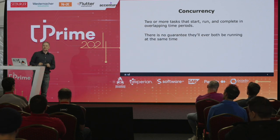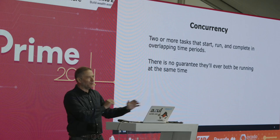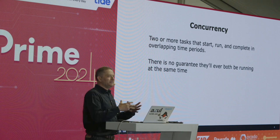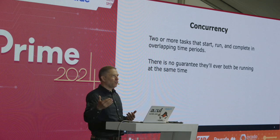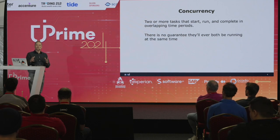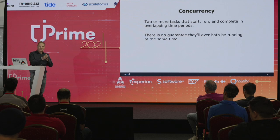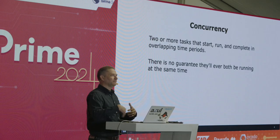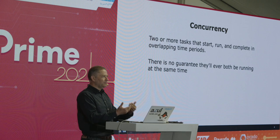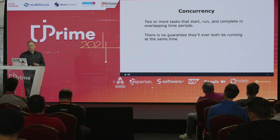If you go back in computing history to the days when we had single-core, single-processor machines, we had operating systems that made it look like you could do more than one thing at the same time. But with only one execution engine, that isn't strictly possible. The trick we used was timesharing — we'd have different threads and processes running and timeshare between them, letting one run for a while, then preempting it, switching to another, and so on. Done quickly enough, you get the illusion that tasks are running at the same time.